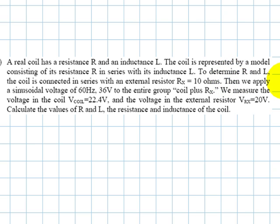Then we apply a sinusoidal voltage of 60 Hz, 36 volts to the entire group coil plus Rx. We measure the voltage of the coil, 22.4 volts.